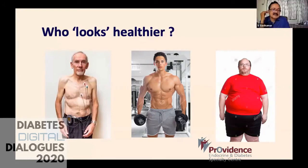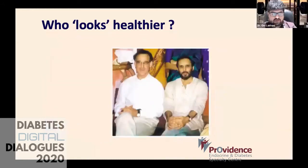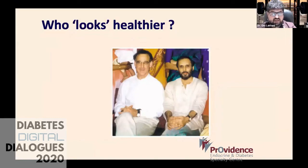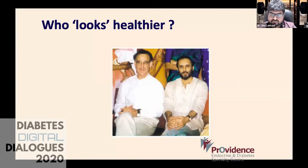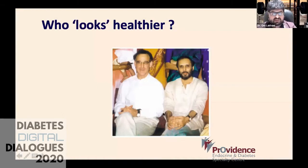But our patients don't look like this all the time. This is the famous YY paradox by Dr. Yudkin and Dr. Yajnik. You can see both gentlemen have a similar age and similar BMI, yet it's difficult to say which one has sarcopenia or which is the healthier one. So our patients often look like this, and the patient may appear to be the fittest person in the room, but if you look more carefully, you might sometimes be wrong.